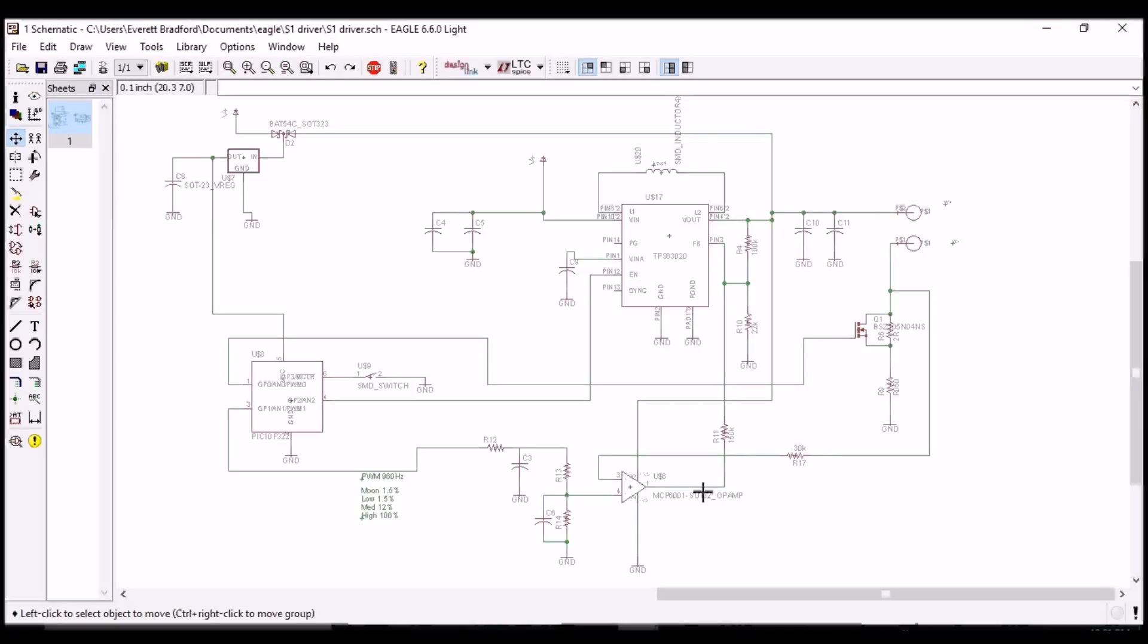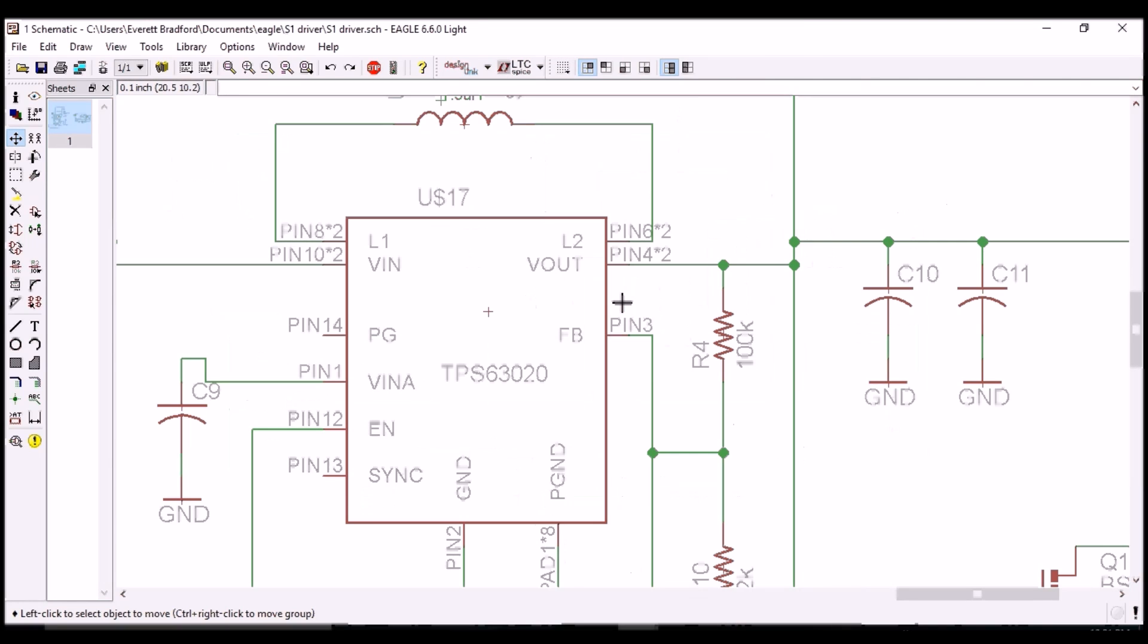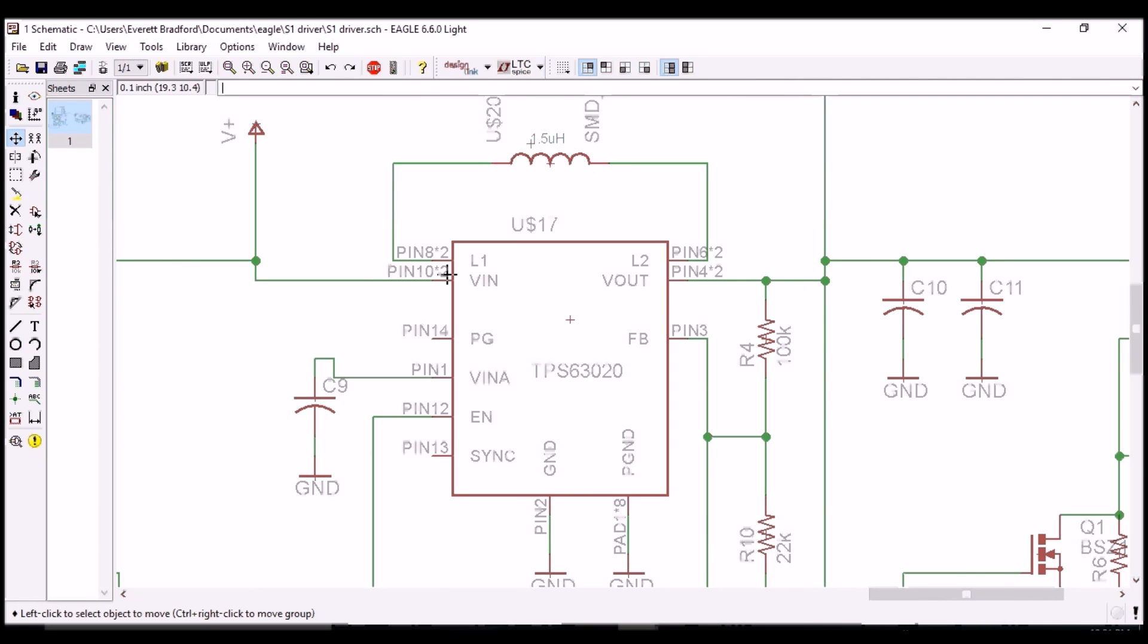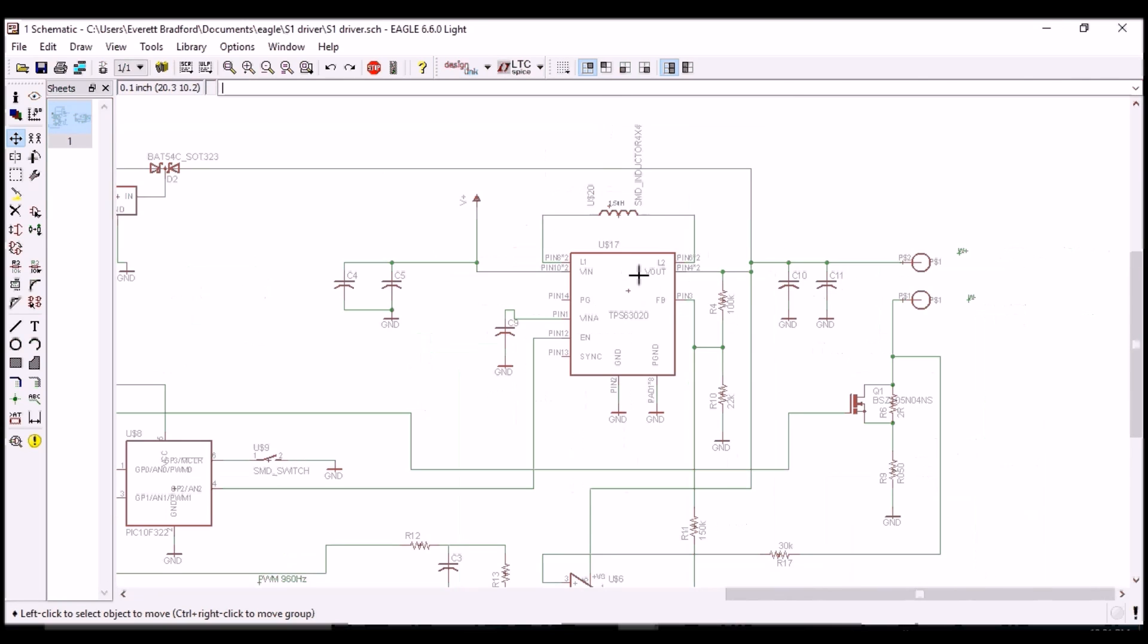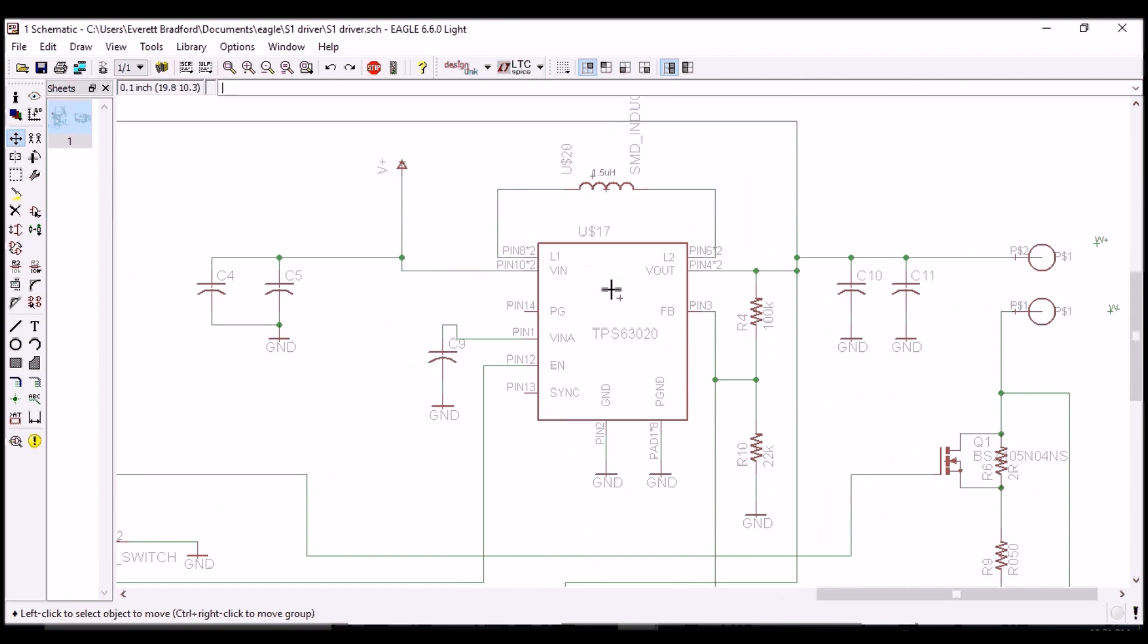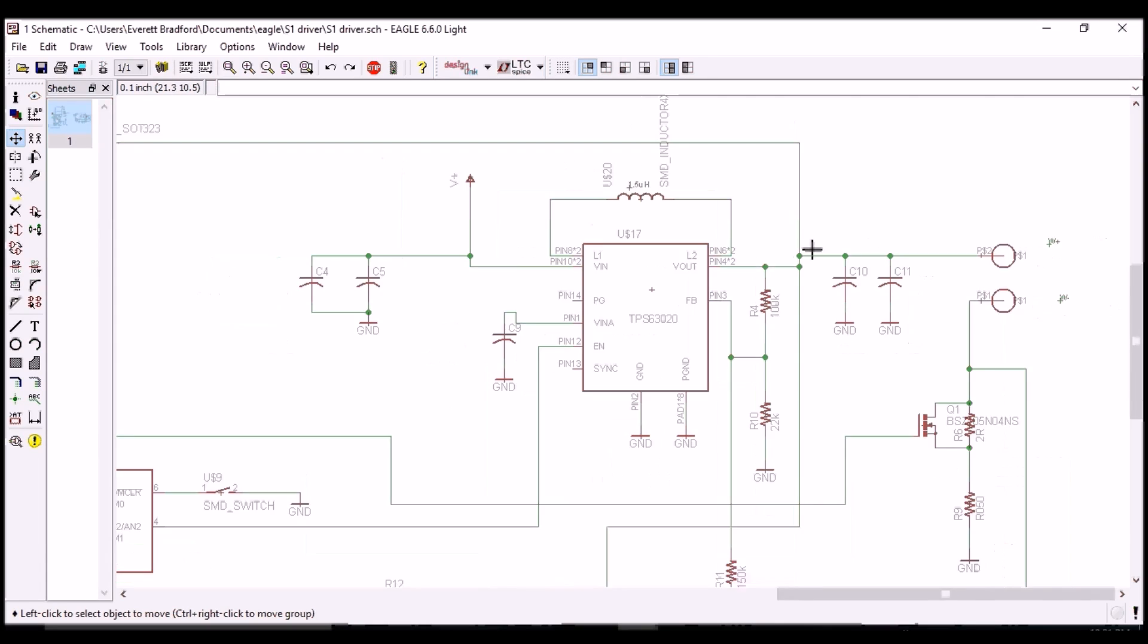Here's the schematic I've drawn of the S1 driver. This is based around the TPS63020 buck boost converter. It's a TI part that automatically switches between buck and boost mode using a single inductor to produce an output voltage that's higher or lower than the input. It will do three amps on buck mode and two amps on boost mode. This is normally a constant voltage part that just uses a simple resistor divider on the feedback pin to set the output voltage.